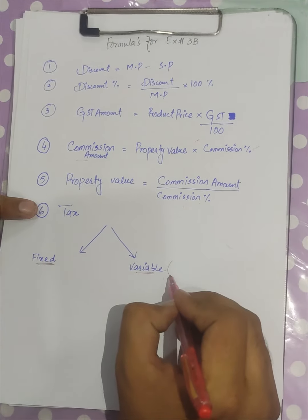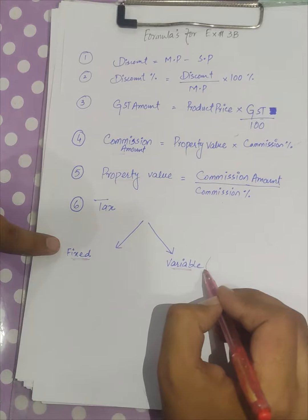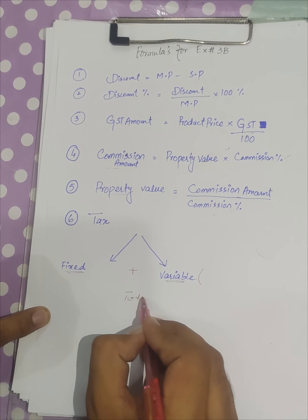The rate is usually given for the variable tax, and we use that rate to find out the variable tax amount. Then we will add both fixed and variable to get the total taxable income.